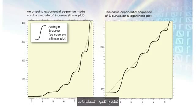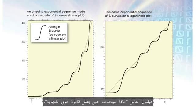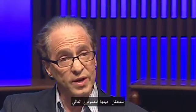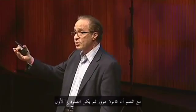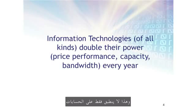Information technology progresses through a series of S-curves, where each one is a different paradigm. People say, well, what's going to happen when Moore's Law comes to an end, which will happen around 2020? We'll then go to the next paradigm. And Moore's Law was not the first paradigm to bring exponential growth to computing.